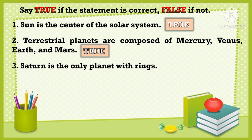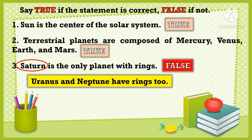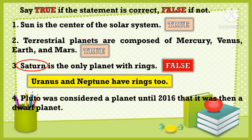Statement 3: Saturn is the only planet with rings. Statement 4: Uranus and Neptune have rings too. Statement 5: Pluto was considered a planet until 2016, and was then reclassified as a dwarf planet. The answer is false because Pluto was reclassified as a dwarf planet in the year 2006.